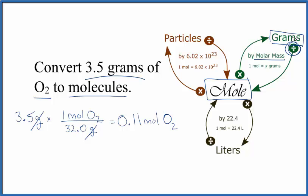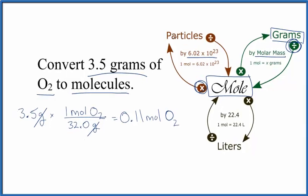To recap, grams divided by the molar mass gets you moles. From moles, we then multiply by Avogadro's number. That'll get us molecules.